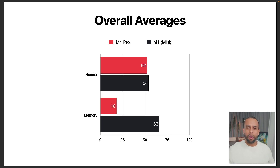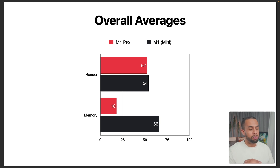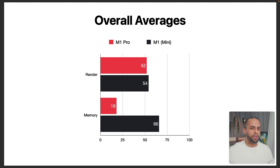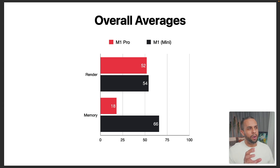If we look at the overall average against the two, just to get a feel, it really seems like the render — the CPU usage — is pretty even between them. However, between both the M1 sessions it was fairly consistent, whereas with the M1 Mini there was a much wider variance between how low and how high it gets. But that difference in the memory has stayed consistent — that gap between the two in memory is quite interesting.